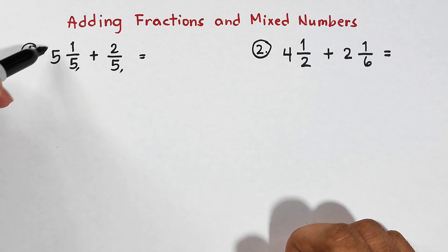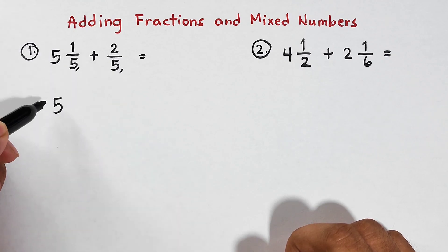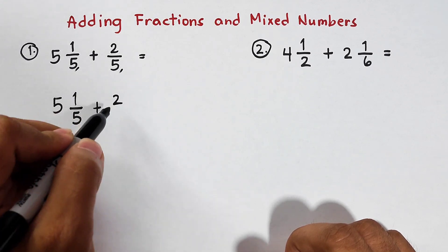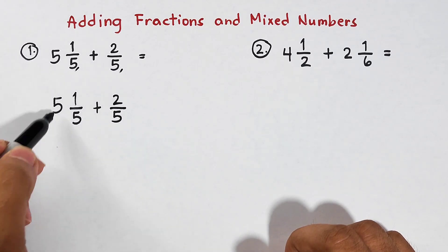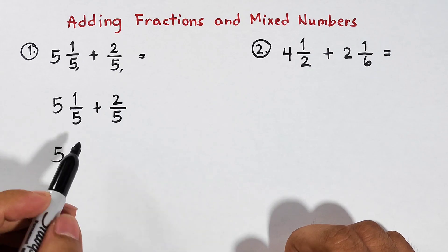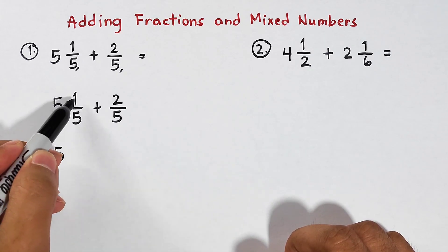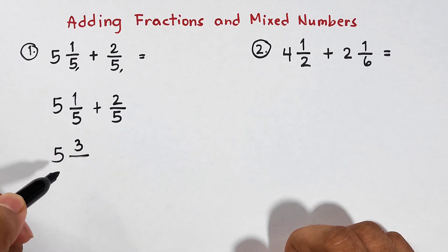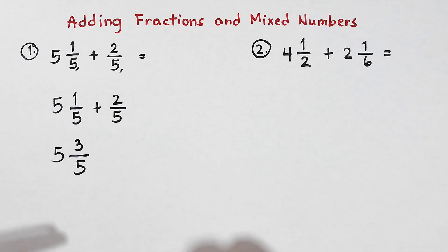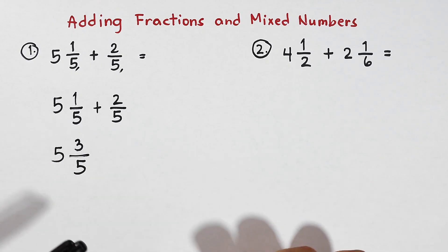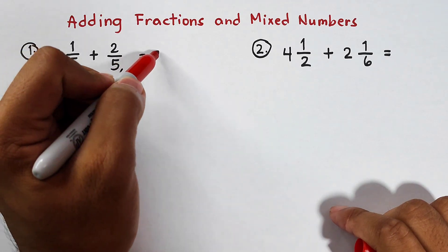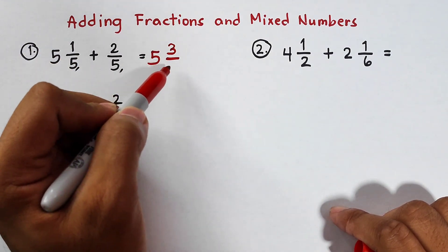How do we add them? First, this one is a whole number. What we need to do is add the fractions: 1 over 5 plus 2 over 5. Since the fractions have the same denominators — both 5 — all we need to do is add the numerators. 1 plus 2 is 3, and copy their common denominator, which is 5. Before declaring this as your final answer, check if we can still simplify the fraction. Since this is already simplified, our answer is simply 5 and 3 over 5.